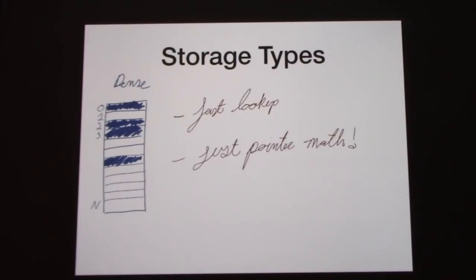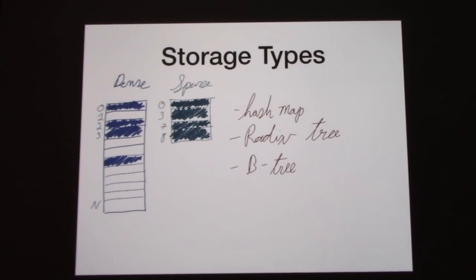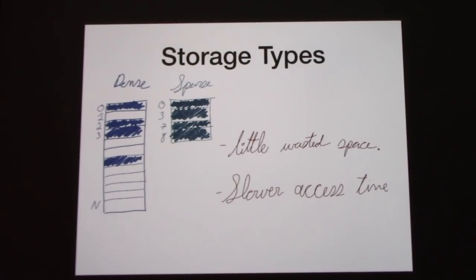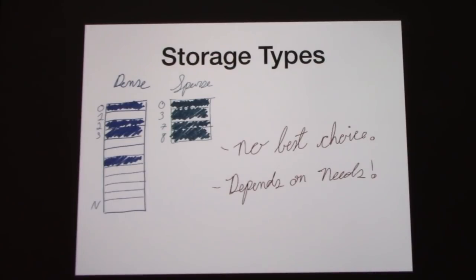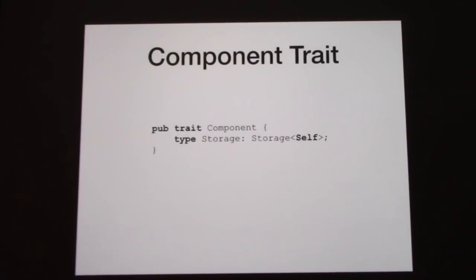Not everything uses dense storage. The other style is sparse, which despite the name is actually more densely packed in memory but the key space is not as dense. Typically you'd do this with a hash map, radix tree, or B-tree. These trade off being more efficient in space for much slower access time — a hash map compared to a vector is orders of magnitude slower, and B-trees have O(log n) complexity. There's no best choice; it depends on your application and you'll tune it later.